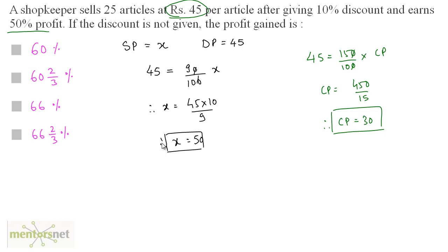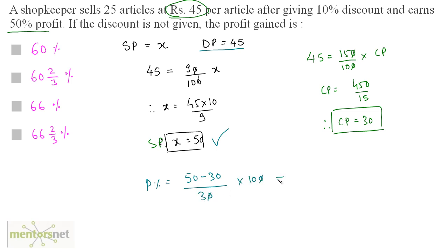The cost price is Rs. 30 and the selling price is Rs. 50. Now, if we do not give any discount, we sell the article at the selling price of Rs. 50. Profit percent equals selling price minus cost price divided by cost price times 100, which is 50 minus 30 over 30 times 100. This equals 20 times 10 which is 200 by 3, equal to 66⅔%. So the answer is option D.